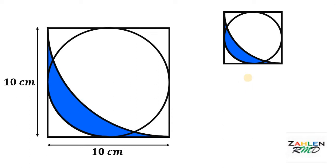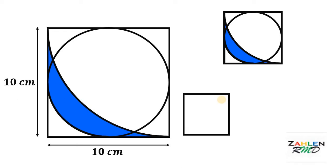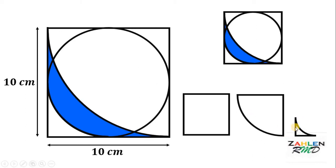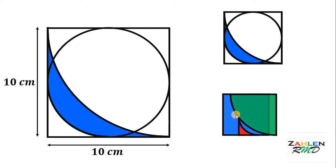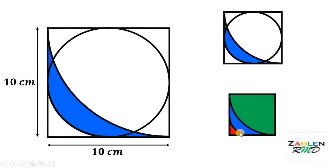Let's see how we get this shape. First, we need a square, and then we need these two shapes: we have a quarter circle and this triangle-like shape. Using these three shapes, we can now find the area of this blue region. What we're going to do is find the area of the square, subtract the area of this quarter circle, and subtract the area of this triangle-like shape. And there we have the area of this blue region.